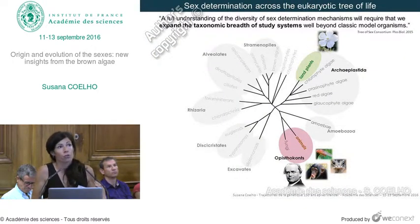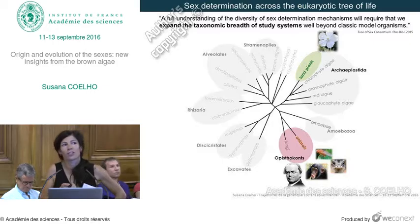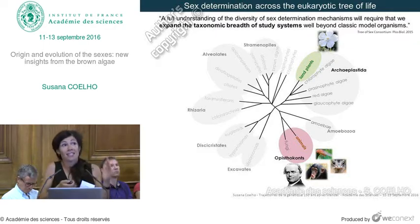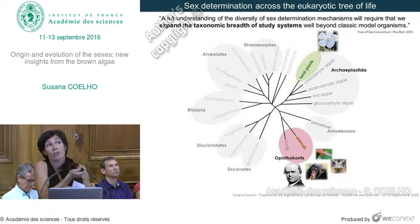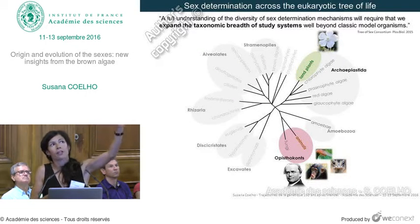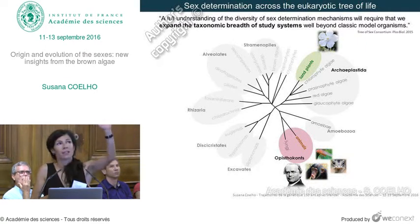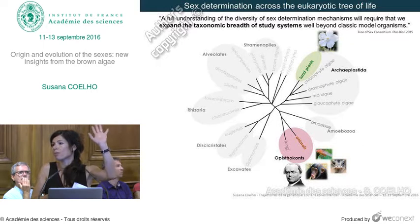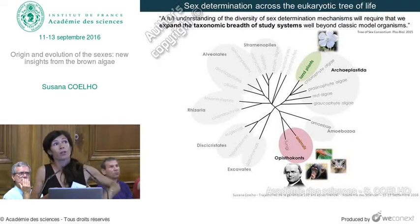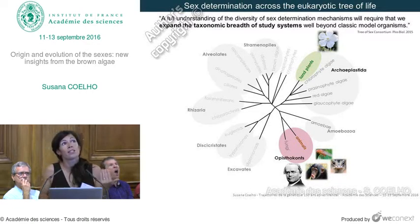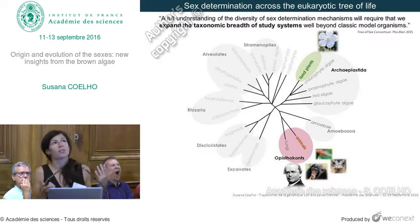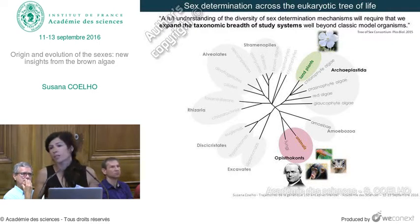As you realize, I've only shown photos of animals. As Jean mentioned yesterday, we are totally biased in research, focusing basically on two groups: opisthokonts — animals — and archaeplastida — land plants. We know virtually nothing about what's going on elsewhere in the tree of life. These are only two relatively small groups in terms of diversity in the whole eukaryotic tree. To fully understand the diversity of sex determination systems, we need to expand our taxonomic breadth to study organisms outside these classical model organisms.